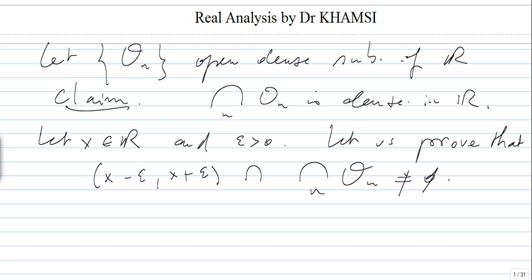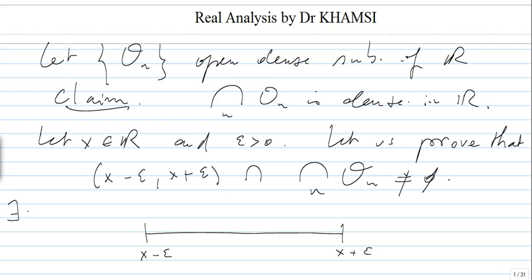This is a tricky construction. Sooner or later we are going to use the completeness of R. We are going to build a sequence which is going to be Cauchy, therefore it converges, and that's how we are going to get a point which belongs to this intersection. First of all, we start with the interval (x minus epsilon, x plus epsilon), and since O_0 is dense, we know that its intersection with O_0 is not empty, and therefore there exists x_0 in O_0 intersect (x minus epsilon, x plus epsilon).